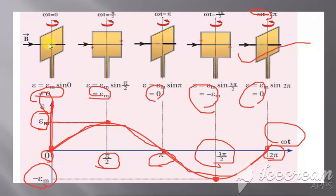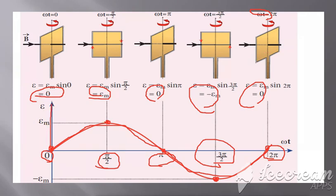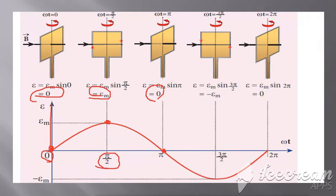Draw this graph, write the values, and draw it clearly so it will be easy for you. This gives the induced EMF by changing the orientation of the coil. Thank you.